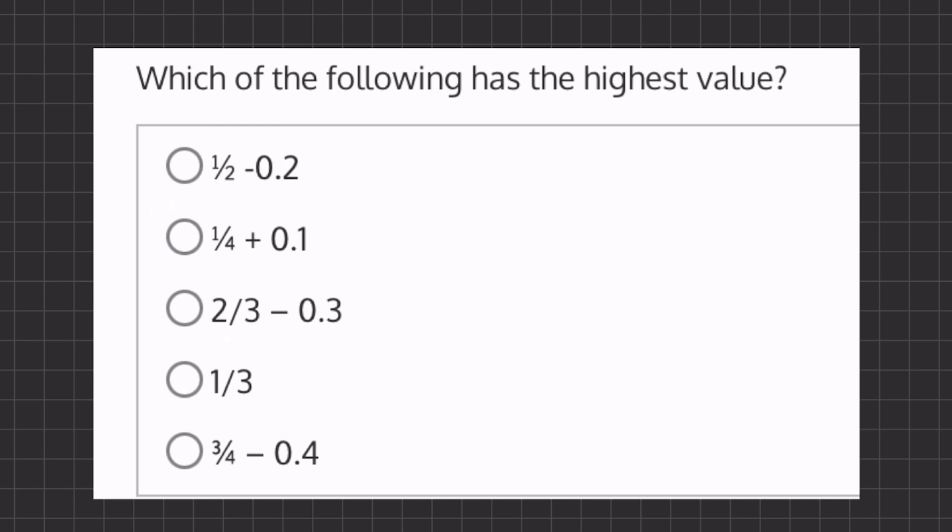So let's start out with our first one. 1 half is equal to 0.5, and if we subtract 0.2 from that, we get 0.3. Now, 1 fourth is 0.25, and if we add 0.1 to it, we get 0.35.